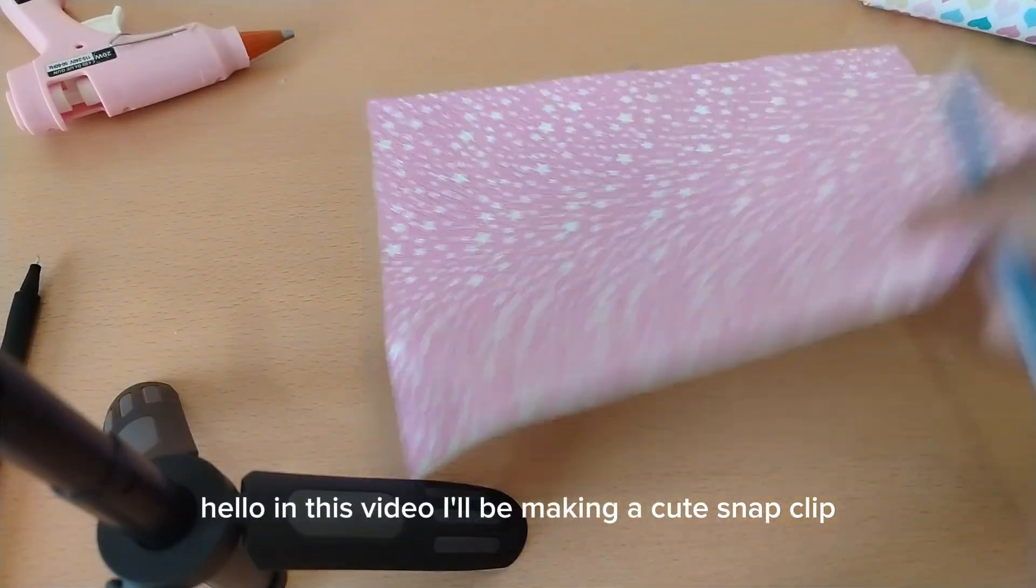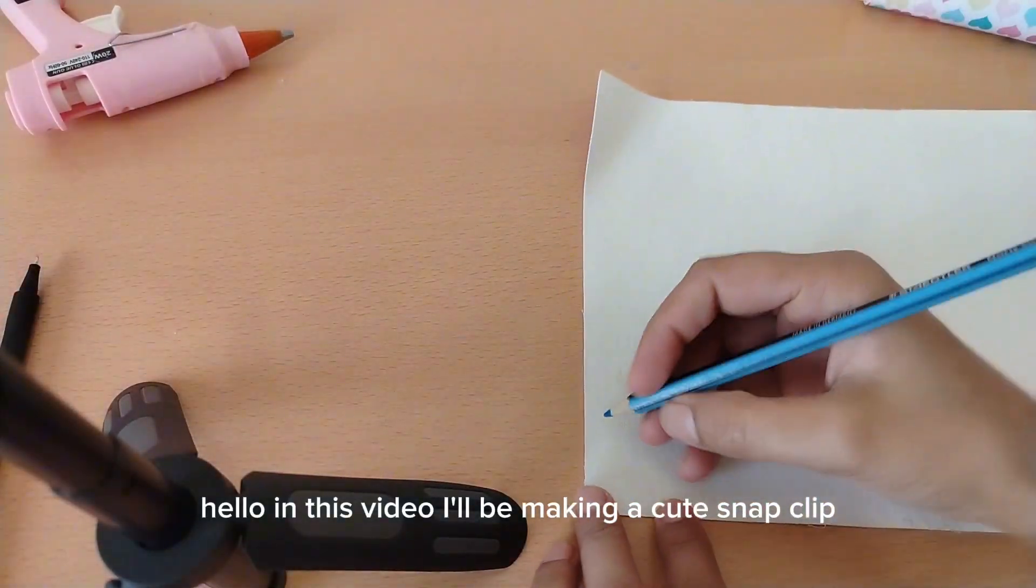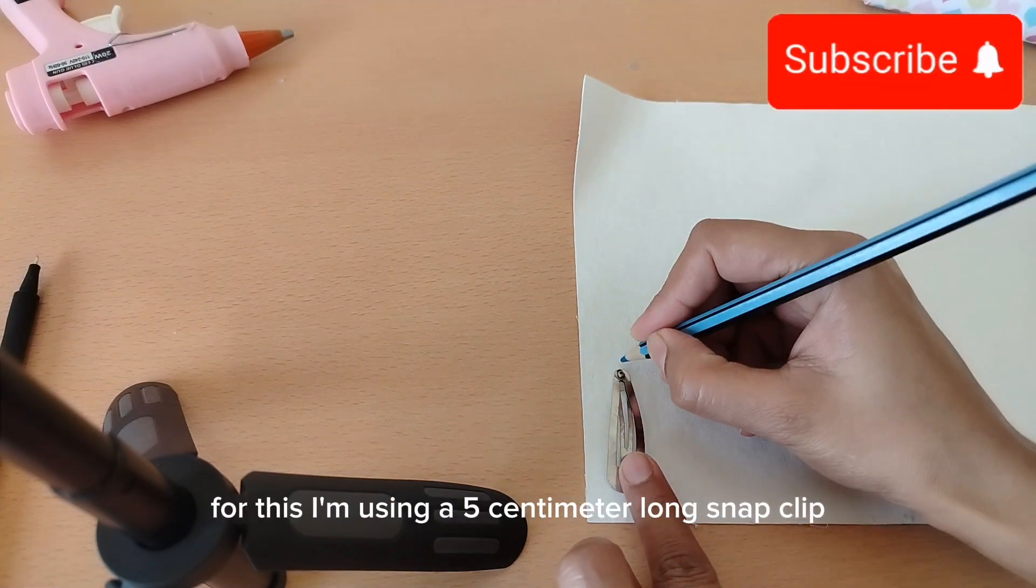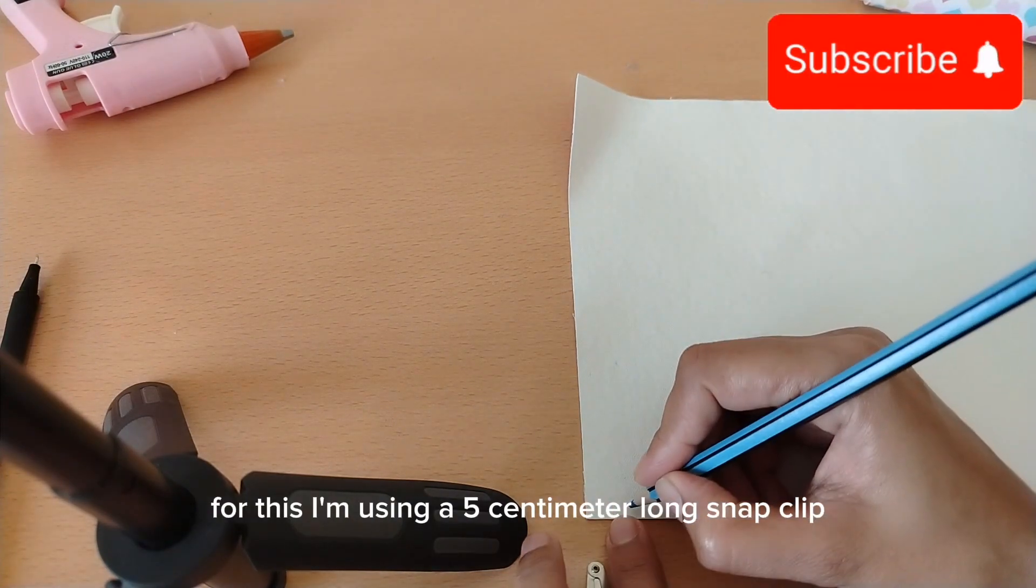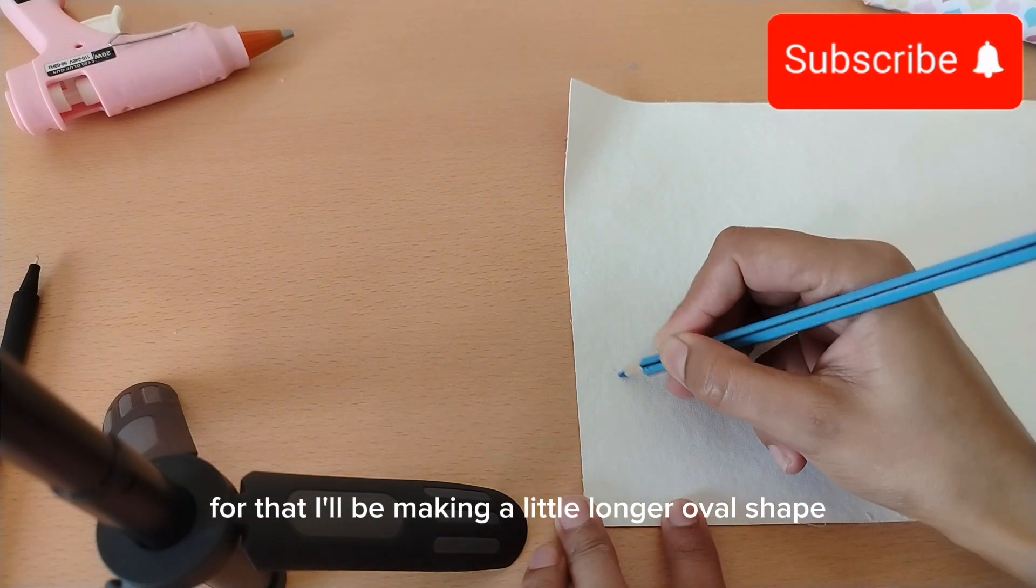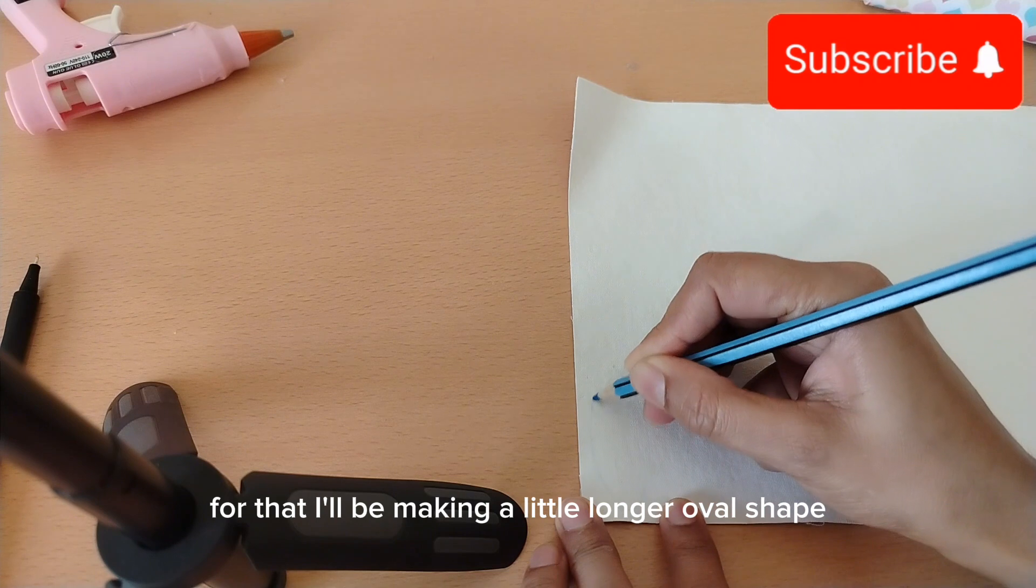Hello, in this video I'll be making a cute snap clip using fox sheet in an oval shape. For this, I'm using a 5-centimeter long snap clip, and I'll be making an oval shape a little longer than 5 centimeters so it can completely hide the snap clip inside it.